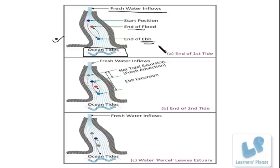The period of quiet water when the tide reverses from flood to ebb or vice versa is referred to as slack water. High water slack is the name given to the tide change from flood to ebb. The duration of slack water is quite variable from one estuary to another and can last from 20 minutes to almost one hour.